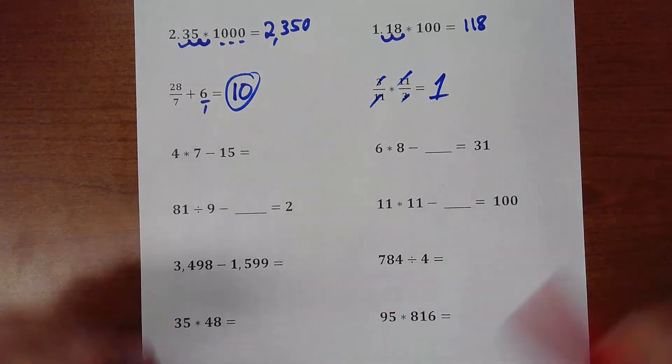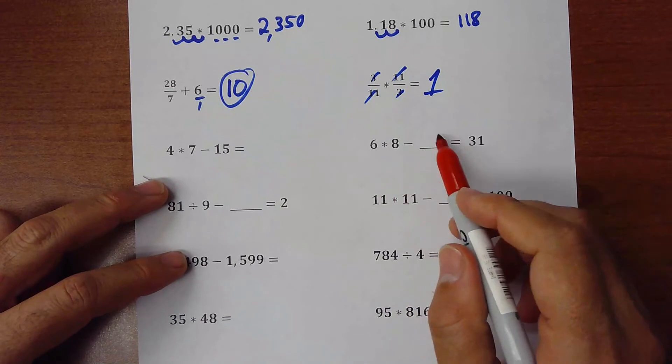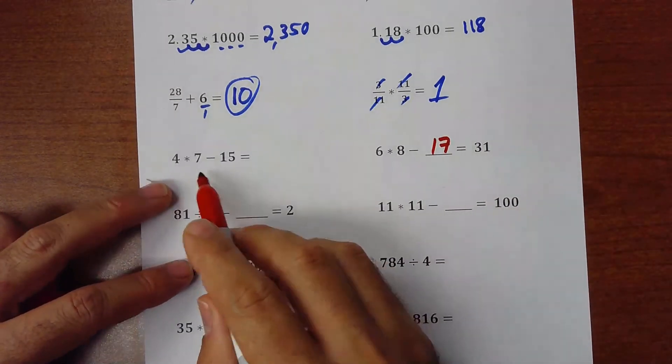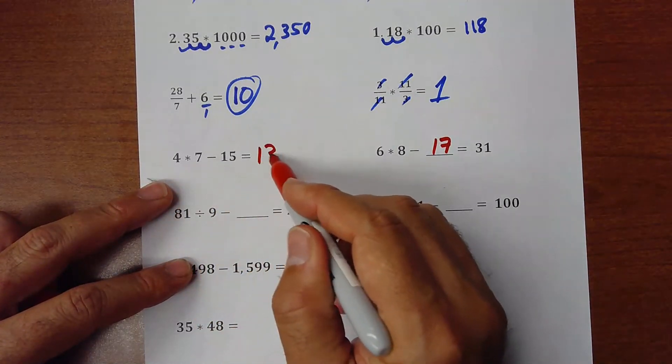So in those two, now you need to find a number. 6 times 8 is 48. Minus something is 31. So that will be 17. Okay? Here, 28 minus 15. I'll be 13. This one.